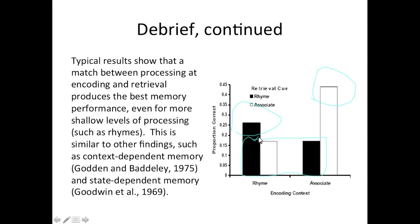What you're going to do is turn in your four totals: the AA total, AR total, RR total, and RA total, so we can create the same graph for our class. It's encoding specificity — the process between encoding and retrieval. If they match, you do really well. If they don't match, you do poorly.